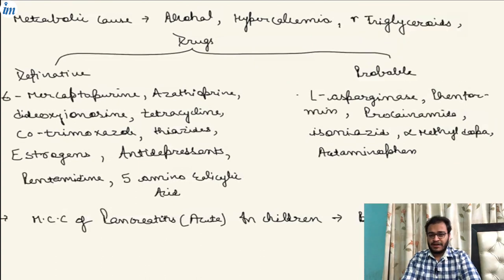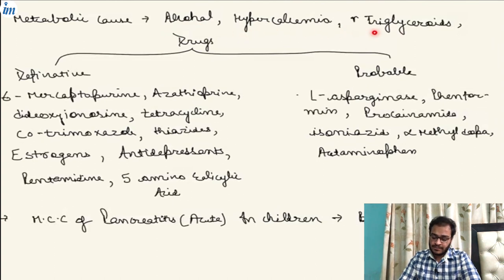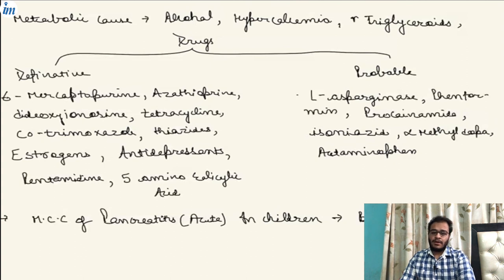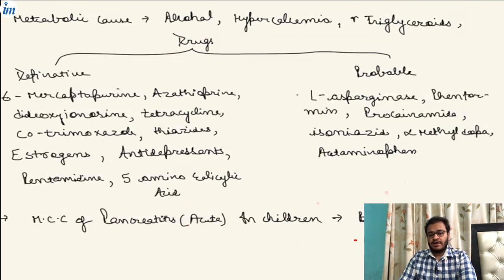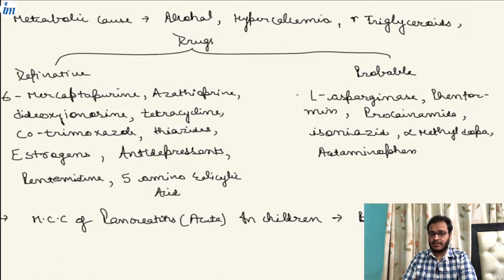There are also metabolic causes. When calcium levels are very high — hypercalcemia — or when triglyceride levels are very high, it can lead to acute pancreatitis. There is also a list of drugs which, when a patient is taking them for another underlying condition, can cause the pancreas to become inflamed and present with symptoms of acute pancreatitis. There are drugs that act as definitive causes and drugs that act as probable causes of pancreatitis.